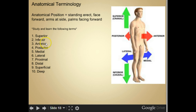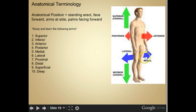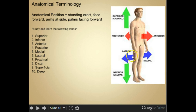Anatomical terminology: superior, inferior, anterior, posterior, medial, lateral, proximal, distal, superficial, and deep. Superior refers to the cranial region. Posterior refers to the back side — think about your back. Anterior refers to the front side — think about where your face is located. Lateral refers to coming from the side, and medial refers to coming from the medial or middle region.